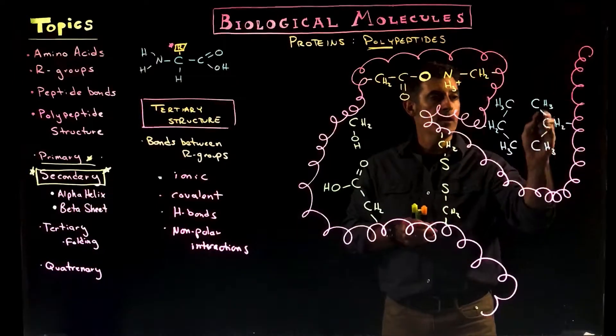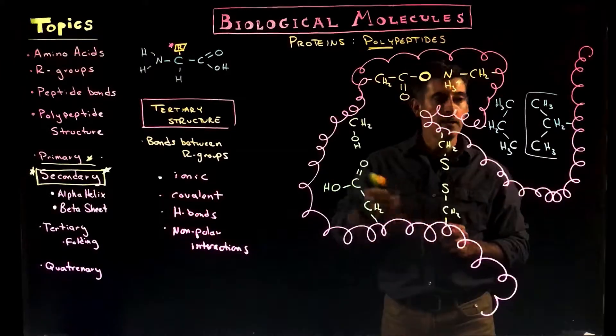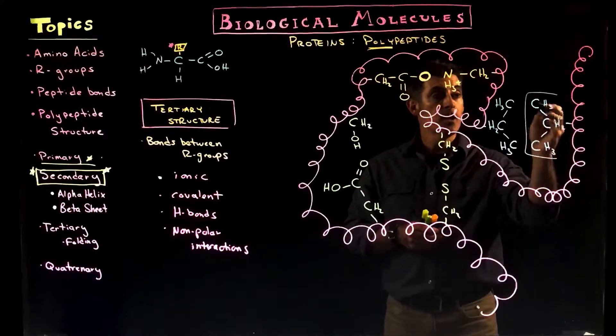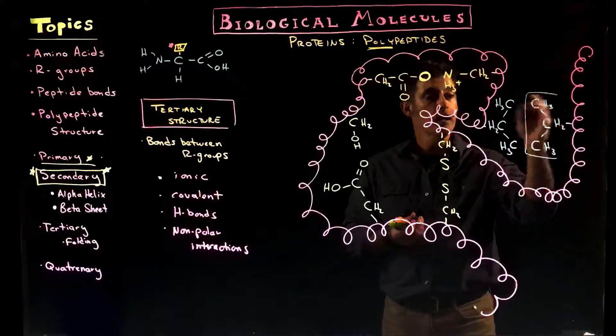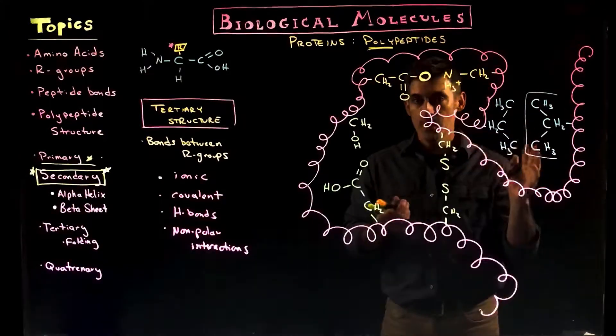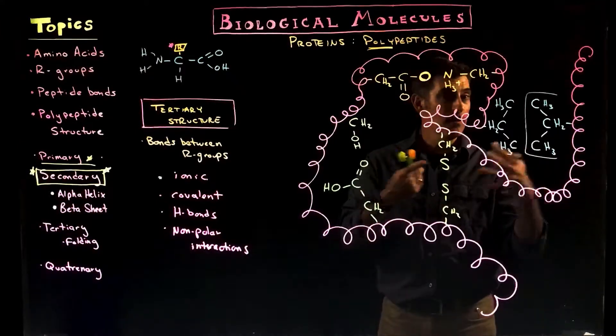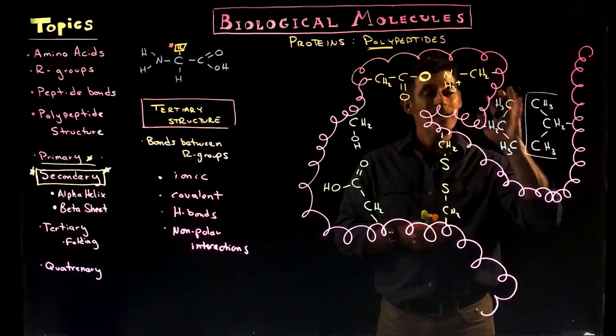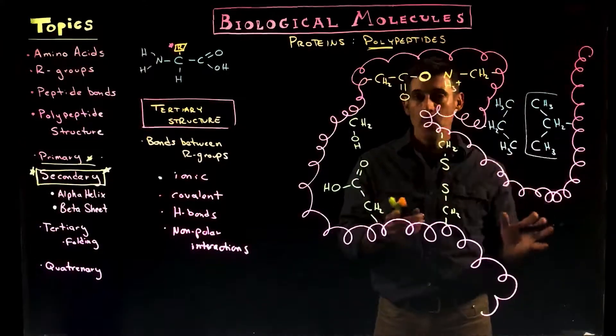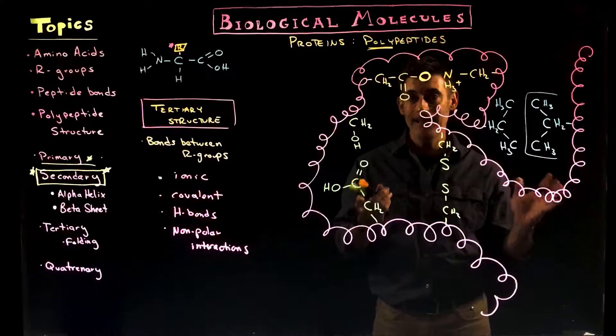So this is an R group, right here, of an amino acid. And it's nonpolar. You can see it's carbons and hydrogens, and that's all we have. And here's another one that's nonpolar. So there's no charge. They don't interact with water. They really don't interact with each other in a way that they're sharing electrons or attracted to charge. But because everything else around them—water, all the other molecules—all have charge or polarity, they don't really like anything else. And the only thing that they'll kind of associate with is each other.